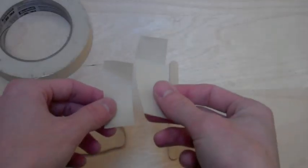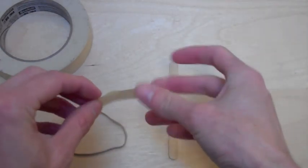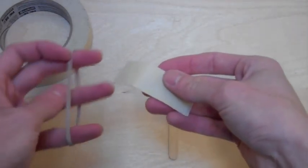To begin making the launcher, double up two pieces of tape. Stick the rubber band on the center of the tape.